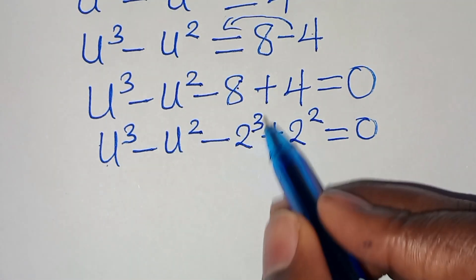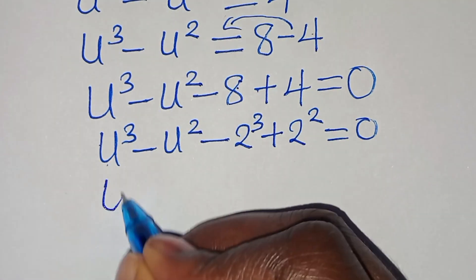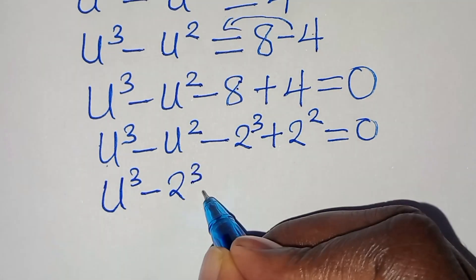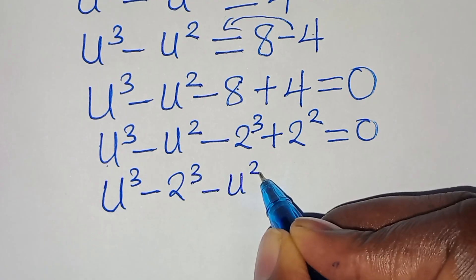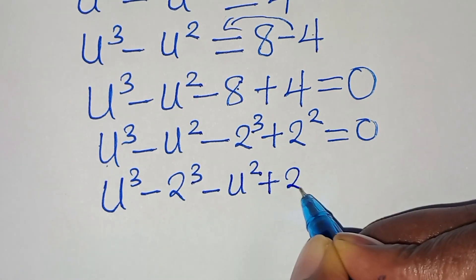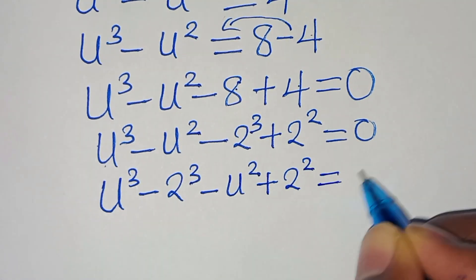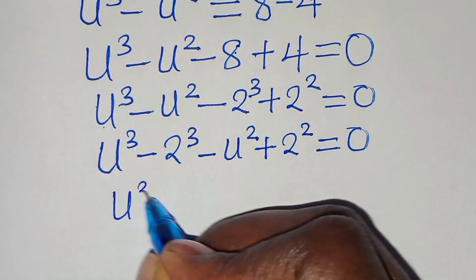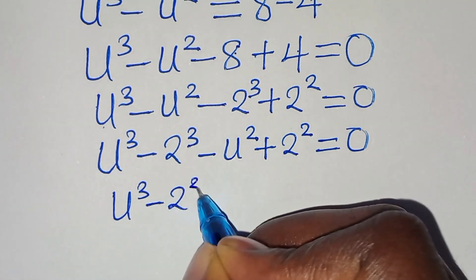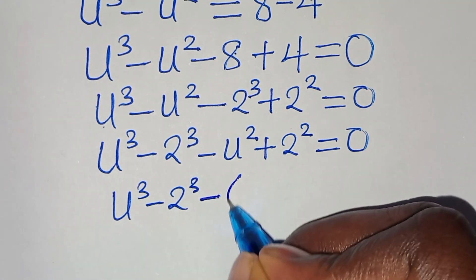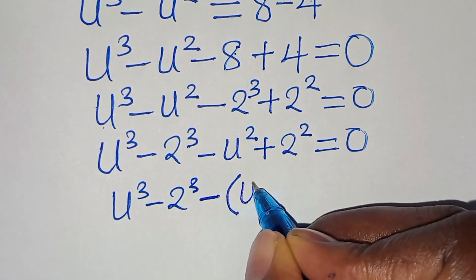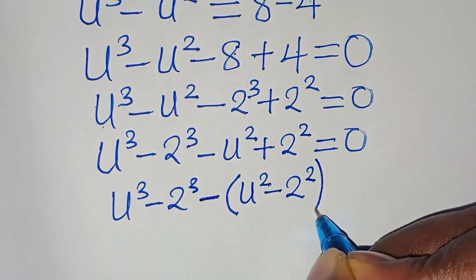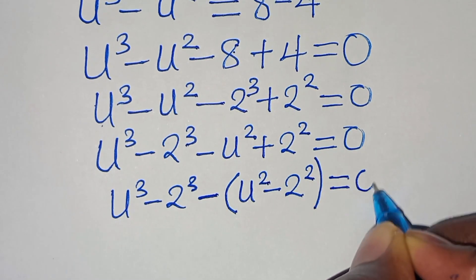Now, we have u to the power of 3 and 2 to the power of 3 here, so this is the same thing as u to the power of 3 minus 2 to the power of 3, subtract u squared plus 2 to the power of 2, this is equal to 0. So this means we have u to the power of 3 minus 2 to the power of 3, subtract into the parentheses u to the power of 2 minus 2 to the power of 2, this is equal to 0.